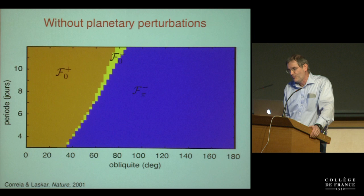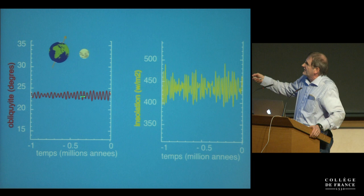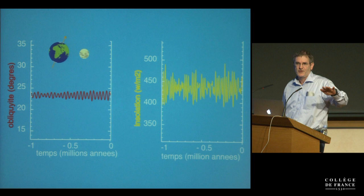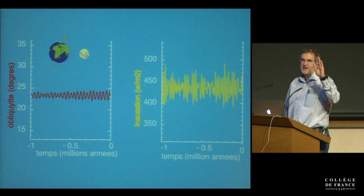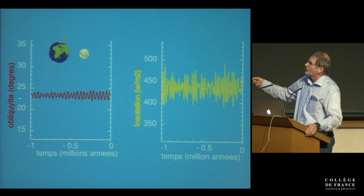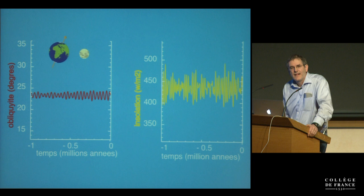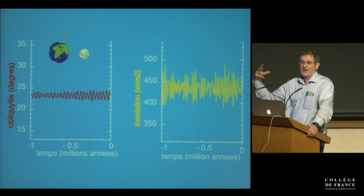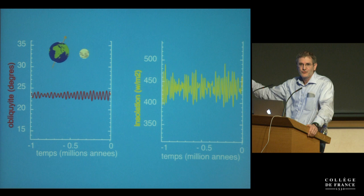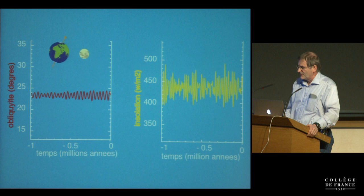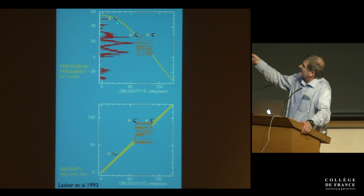The other planets create a driving term that tilts the spin axis, recorded in paleoclimate data with a period of about 40,000 years and 1.3 degrees obliquity. This occurs because Earth's precession period is about 20,000 years — very different from the forcing terms of 40,000 years to a few million years. If you look at this more globally, the precession speed depends on obliquity as a cosine curve. Changing obliquity changes the precession period.